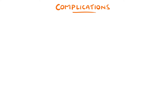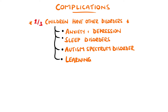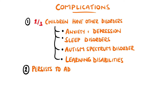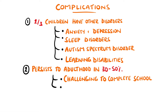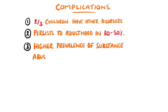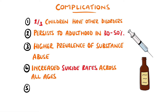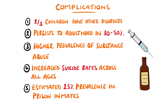In two out of three cases, children with ADHD will also have other psychiatric disorders, including anxiety and depression, sleep disorders, autism spectrum disorder, or learning disabilities. ADHD persists to adulthood in 30 to 50% of cases. As a result, there can be social consequences such as difficulty completing school and holding down a job. There is a higher prevalence of substance abuse disorders in ADHD patients and an increased risk of suicide across all age groups. ADHD patients are also over-represented in prison, with some studies suggesting a 25% incidence.